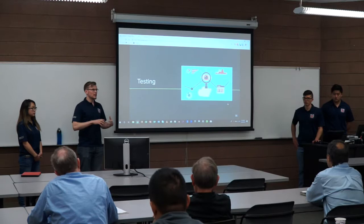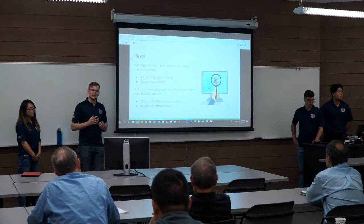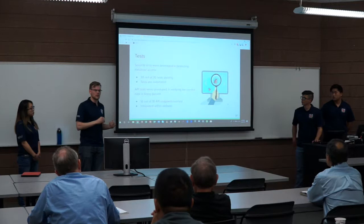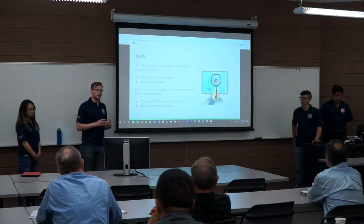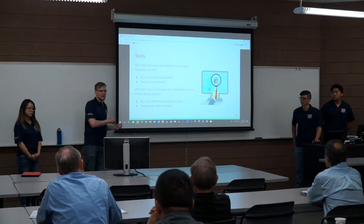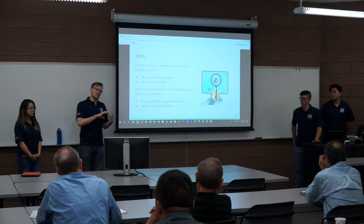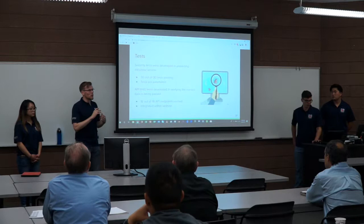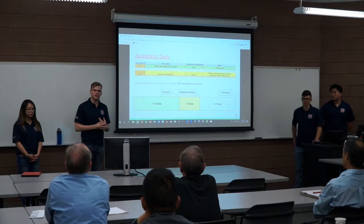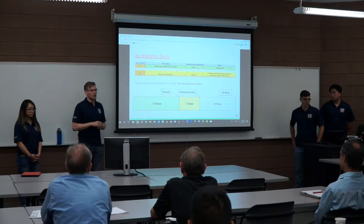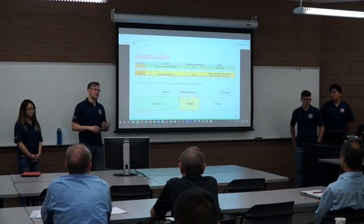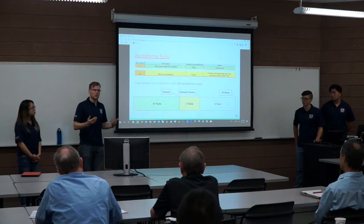Now we'll cover testing to ensure we deliver the best quality product. Security tests ensure the correct users have authorized access to the right data — all 30 tests are passing. API tests verify that correct data is passed to the website — all 18 API endpoints have been verified, and most are integrated in our website today. Acceptance tests ensure promised features have been met: nearly half are fully passing and over half are at least partially passing, with all tests expected to pass in the next iteration.